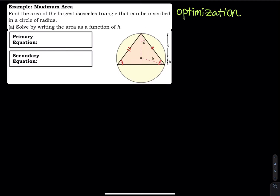We are trying to find the area. So that means the primary equation must be related to area. What is the area of a triangle? The area of a triangle is base times height divided by two. But there is a problem — we don't have the base, we don't have the height. So how do we find the base and height?